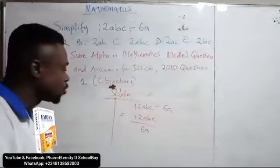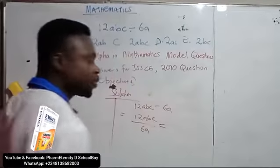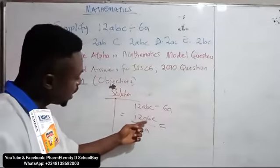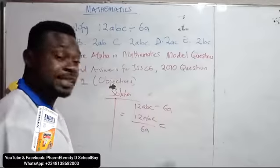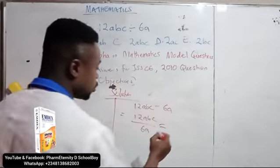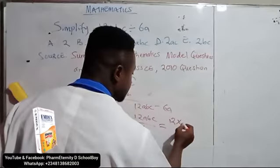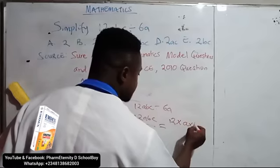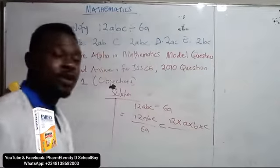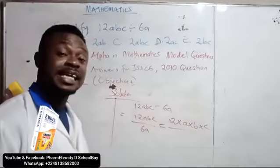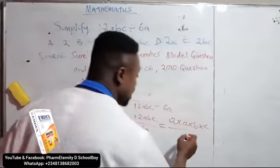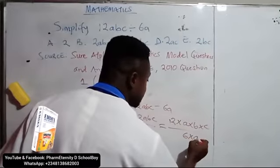Now let's go. The operation between 12A, B and C is multiplication. So we have 12 times A times B times C. While the operation between 6 and A is also multiplication. We have 6 times A.